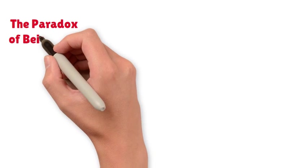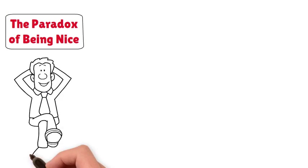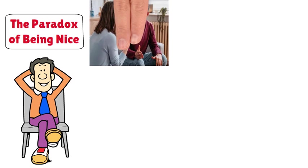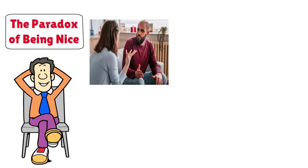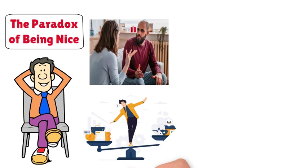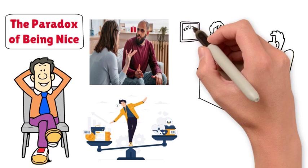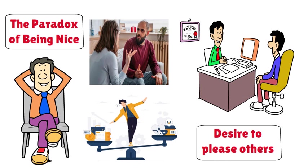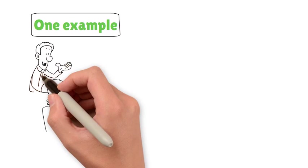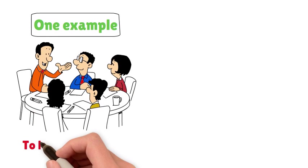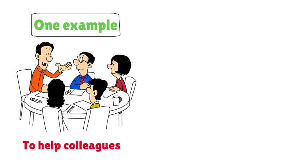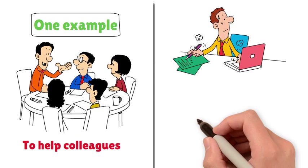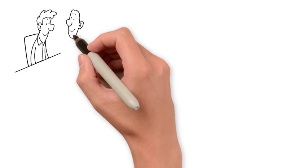The Paradox of Being Nice encapsulates the tension between being kind and assertive, often leading to a dilemma where individuals struggle to balance their own needs with the desire to please others. One example is the scenario of an employee constantly agreeing to take on extra tasks at work to help colleagues, only to find themselves overwhelmed and undervalued.